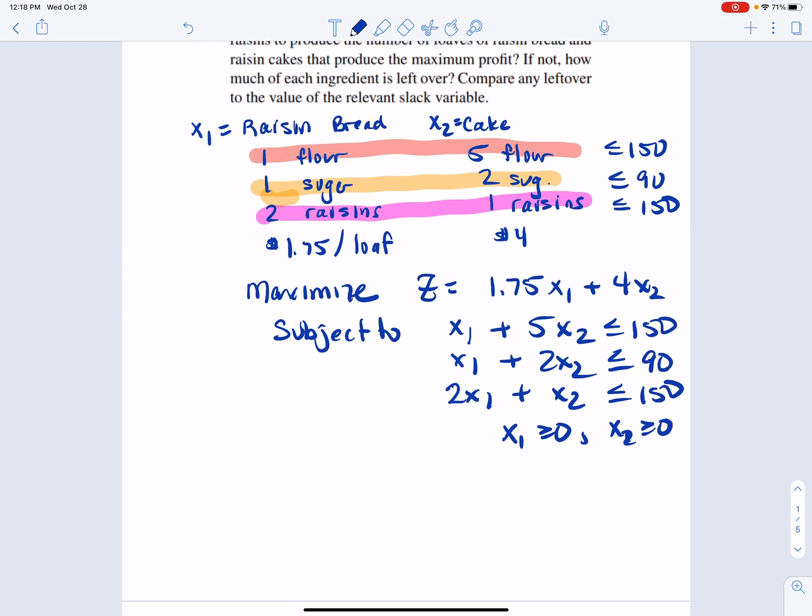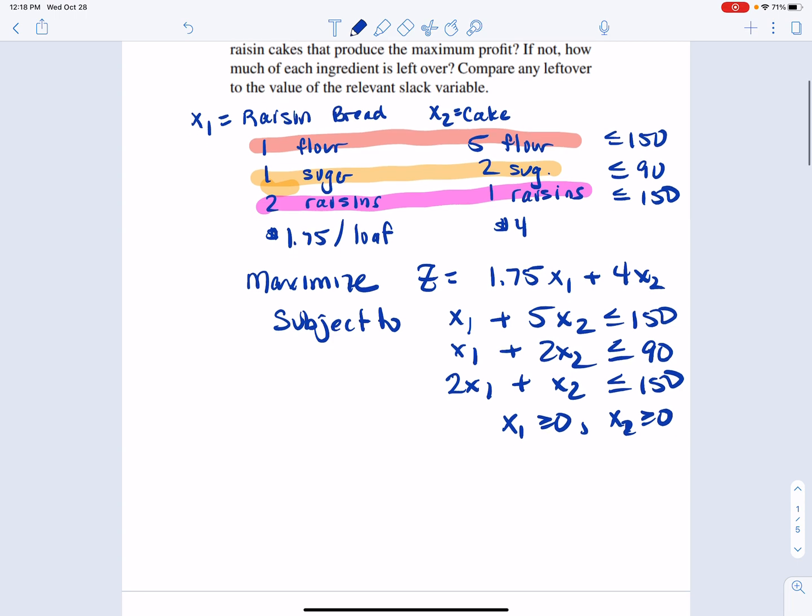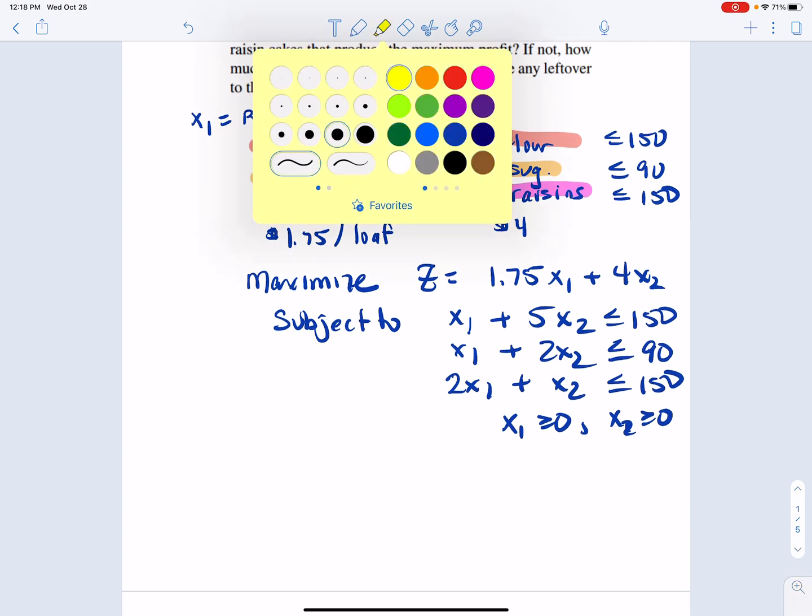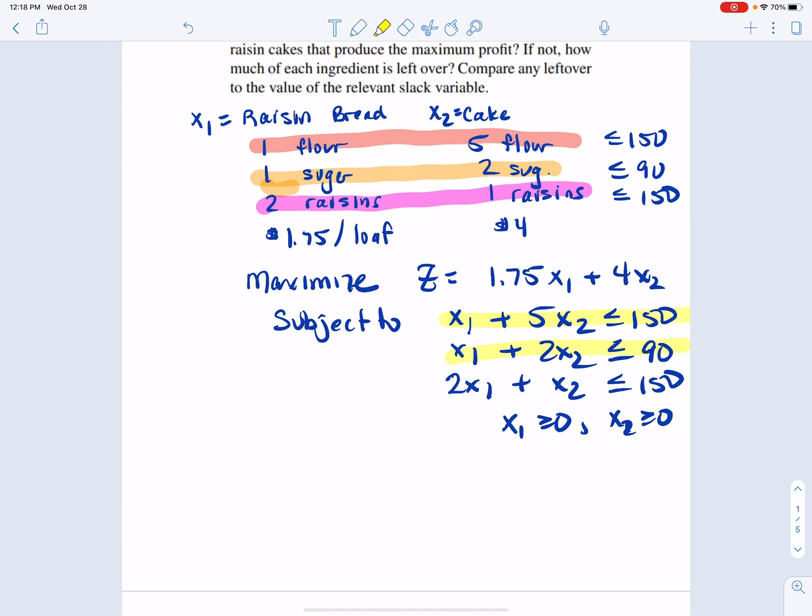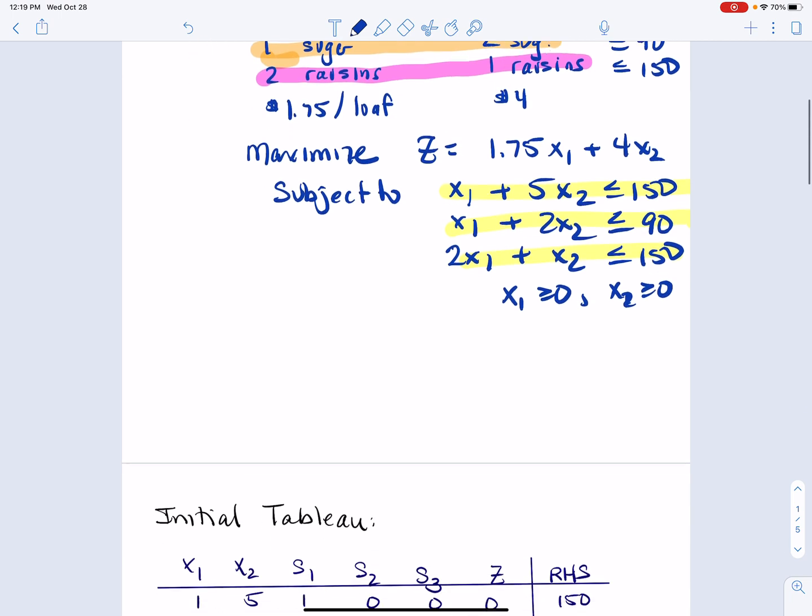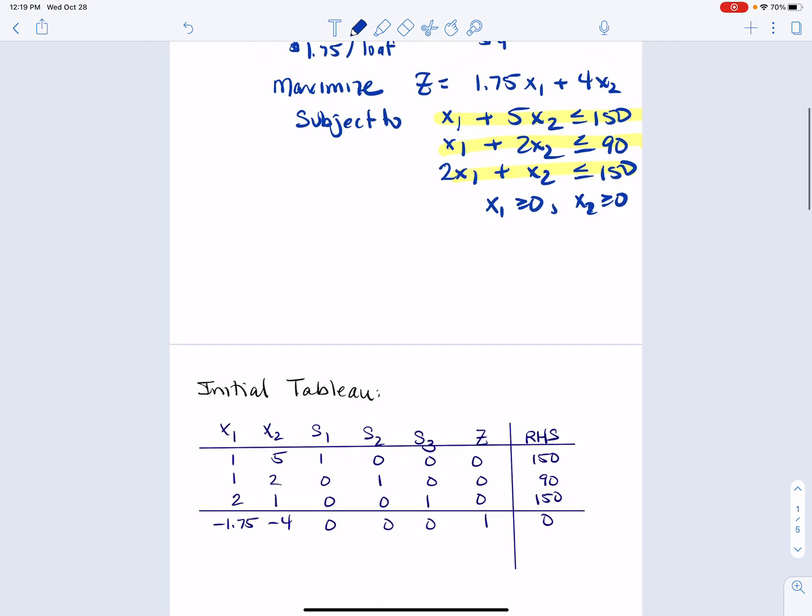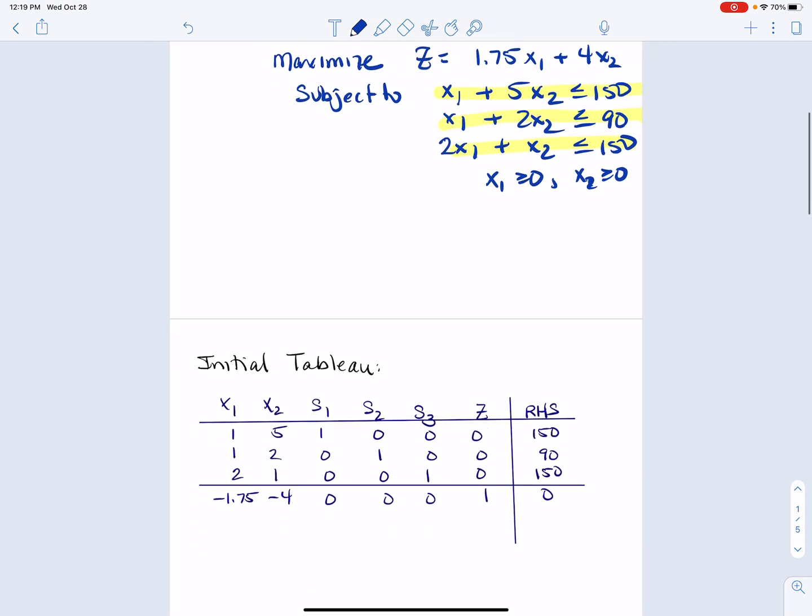So just remember how everything gets set up here. We're going to have to introduce slack variables to each one of these constraints here. 1, 2, 3. So we're going to have an S1, an S2, and an S3. And remember that we write the z equation in that weird form where we put the negatives plus z equals 0. Once we do that, here is the initial simplex table. And we're going to try to put all the information there so we can see exactly where everything came from.